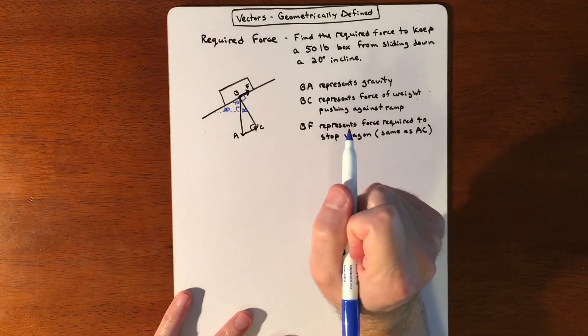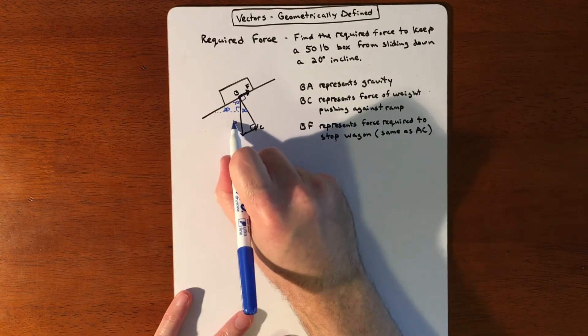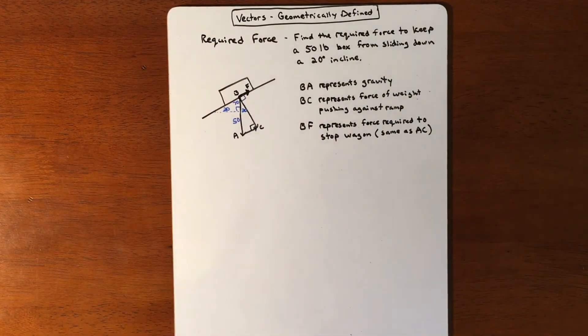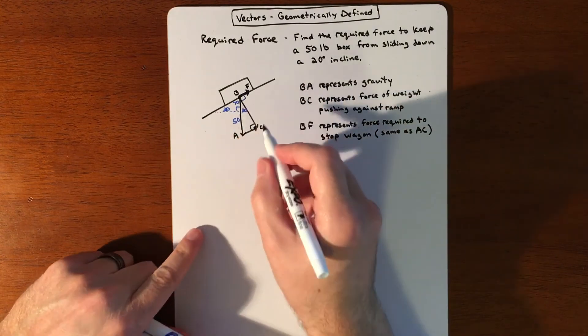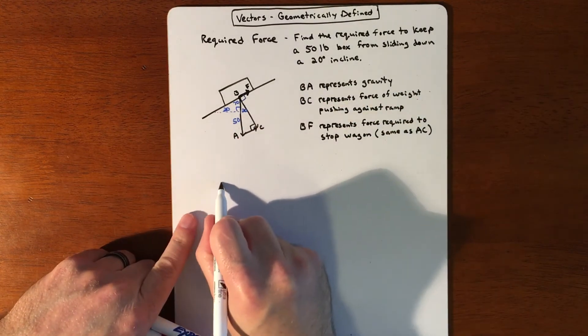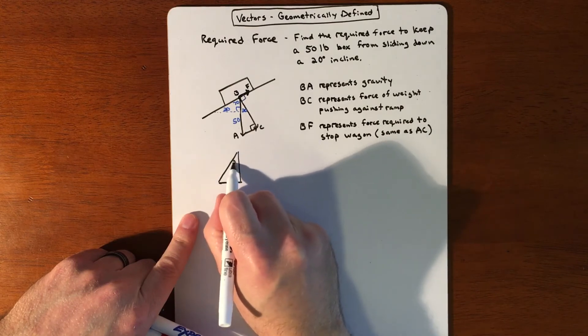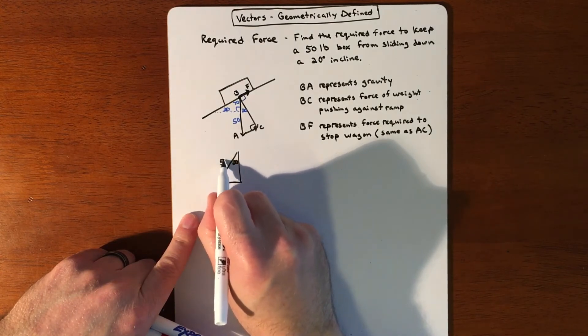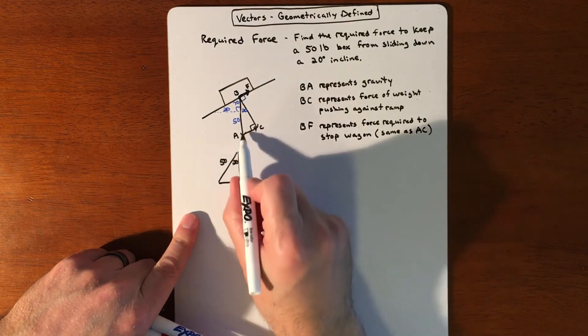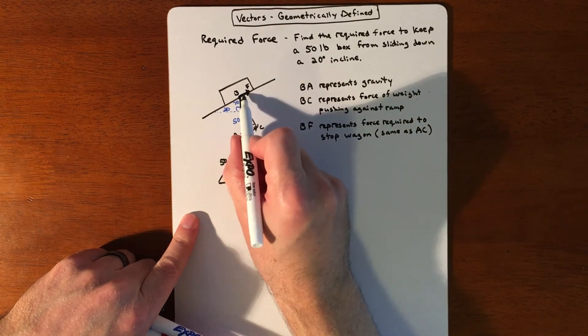So if we look at what we have, we have a right triangle. If we ignore all the other stuff going on, you have a right triangle that has a 20-degree angle, 50, and this is AC. AC is equivalent to BF, so we're looking to figure that out.